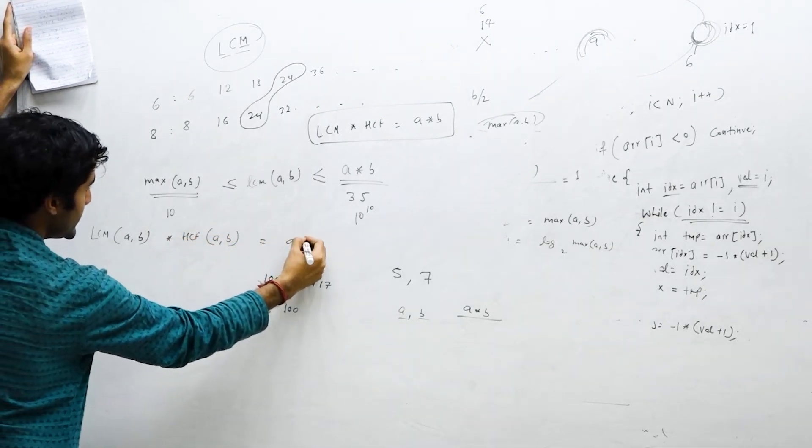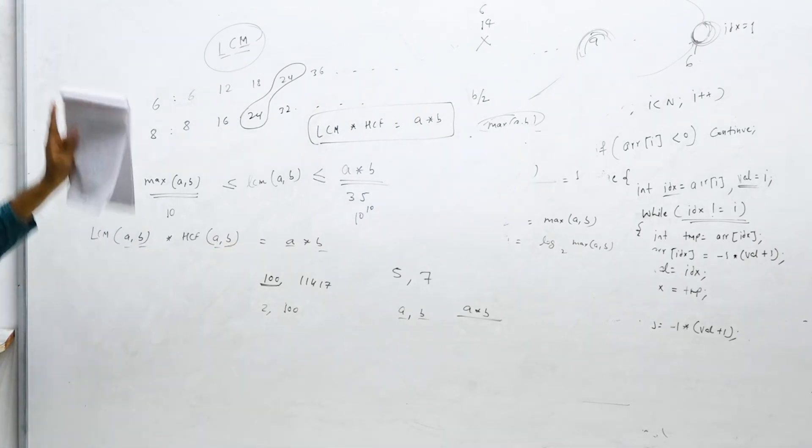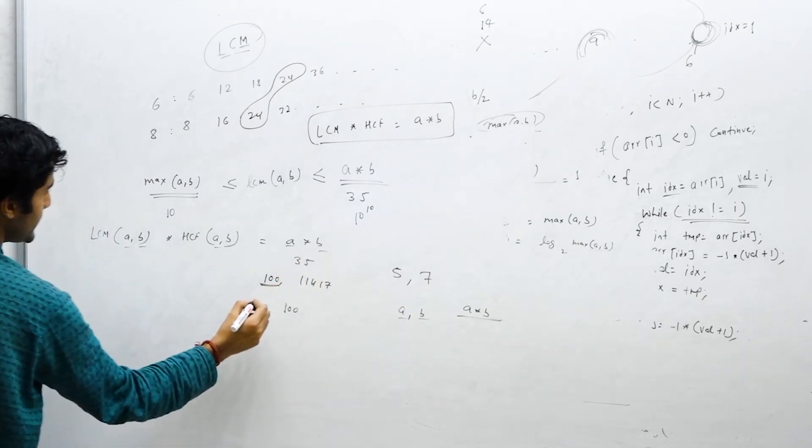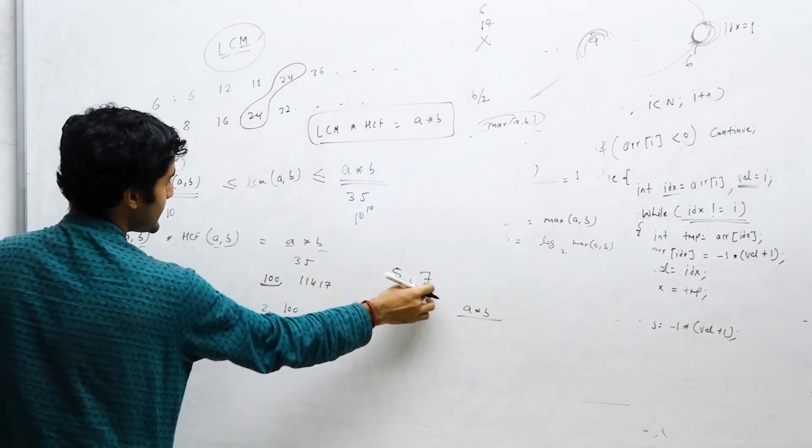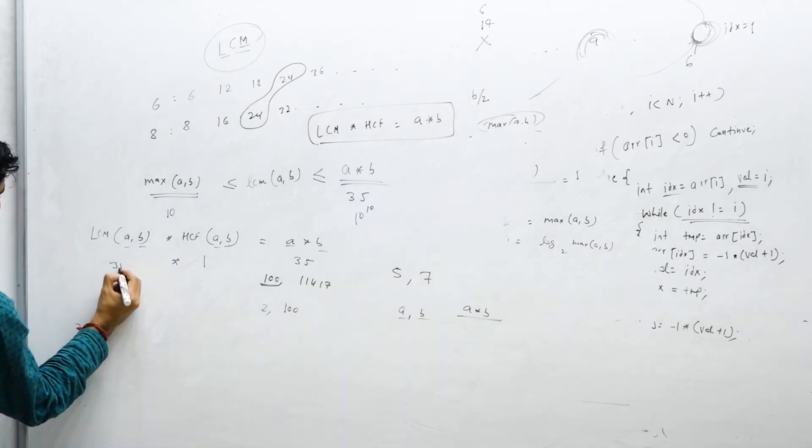A very important thing is that this LCM is the LCM of a comma b, and the HCF is the HCF of a comma b. You can take an example: let's say the numbers are 5 and 7, so the product is 35. What is the HCF of 5 and 7? The HCF is 1 and the LCM is 35.